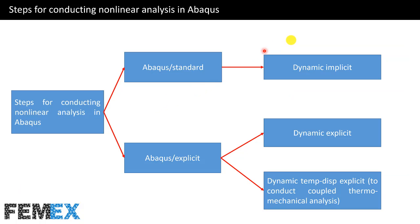This is the link of the first part of this tutorial. In the first part, I talked about Steps for Conducting Non-linear Analysis in Abaqus. If you want to use the Abaqus Standard Solver, you must select Dynamic Implicit Step. This step must also be used to conduct coupled thermomechanical analysis.